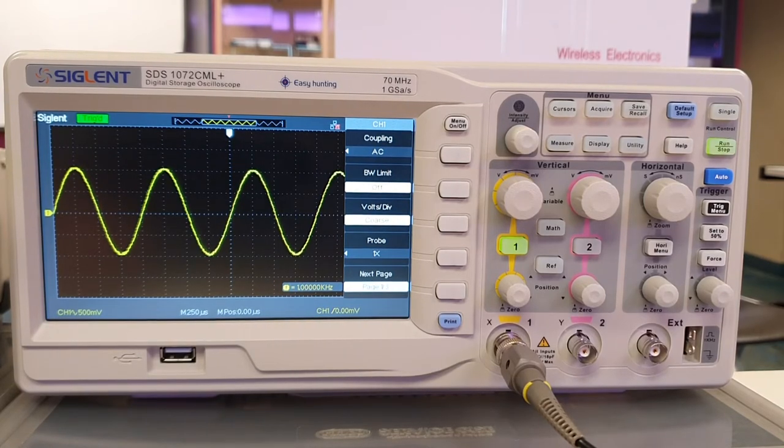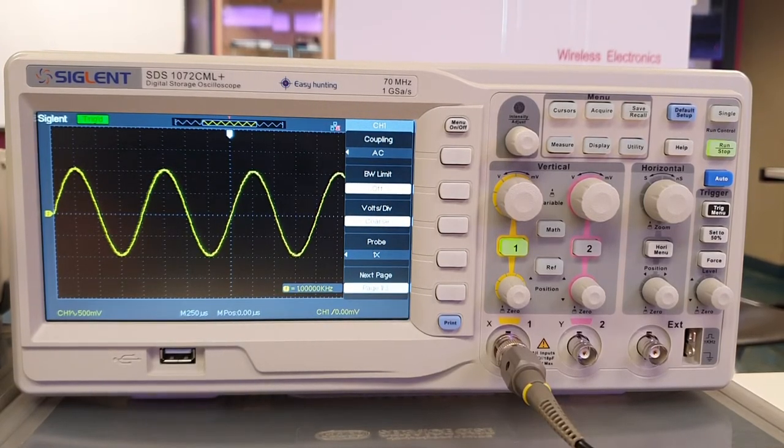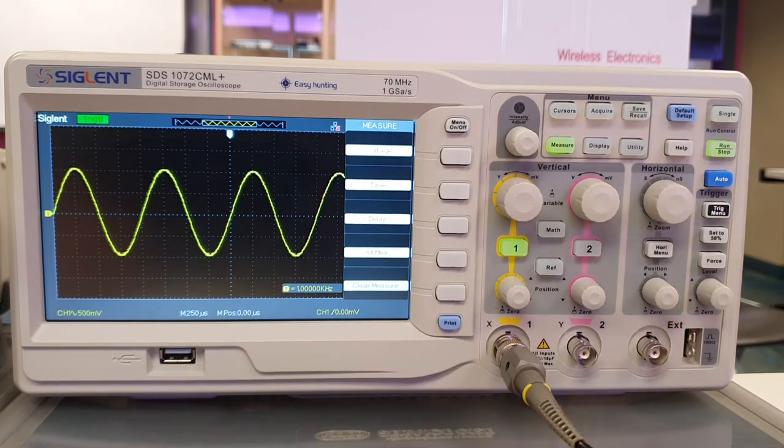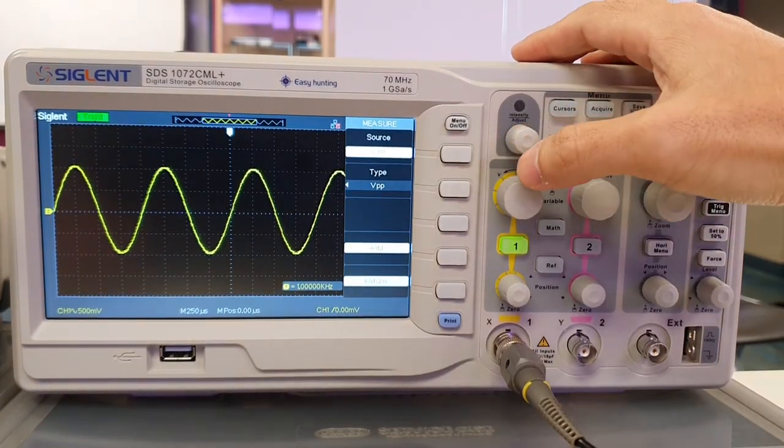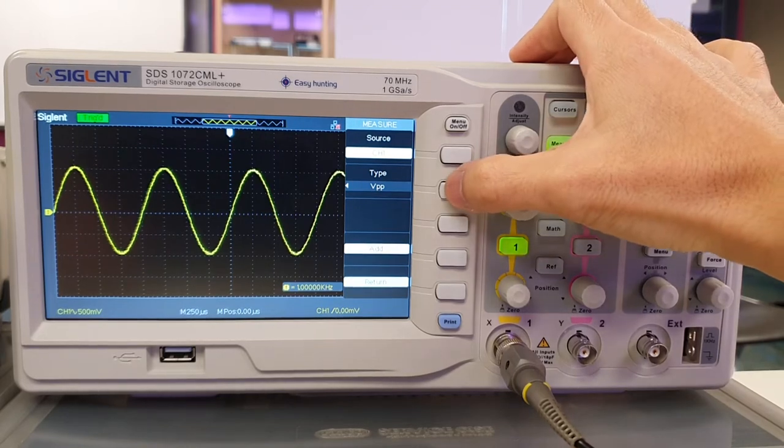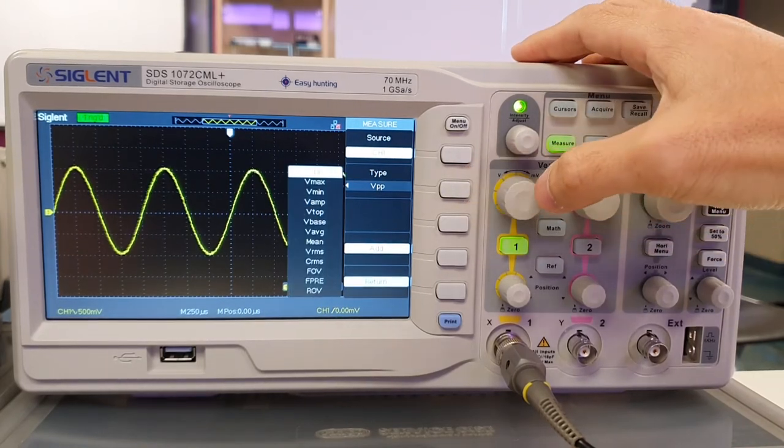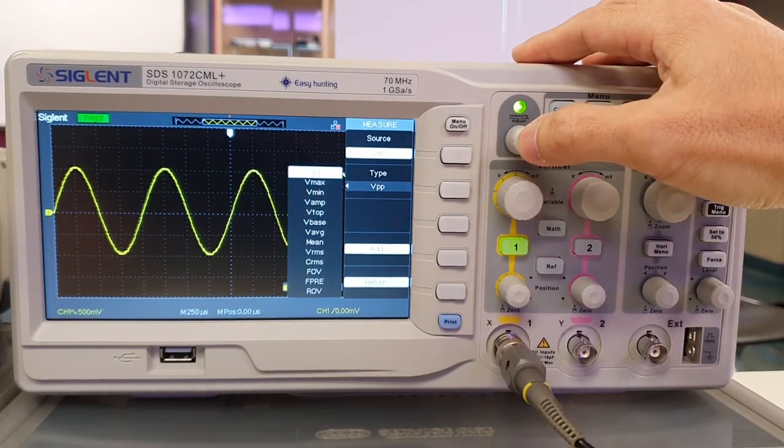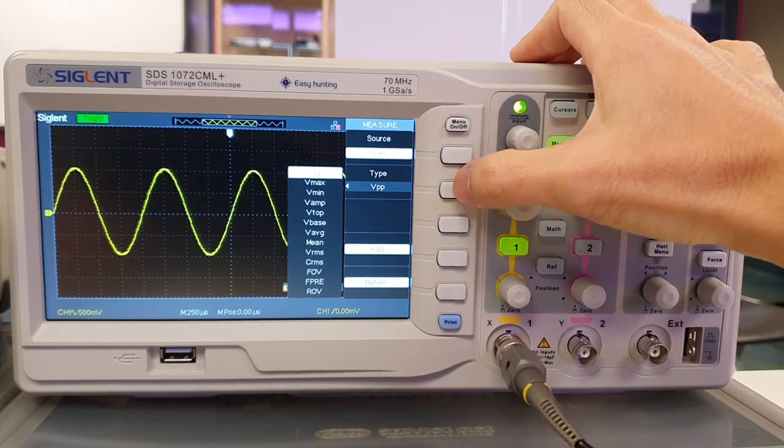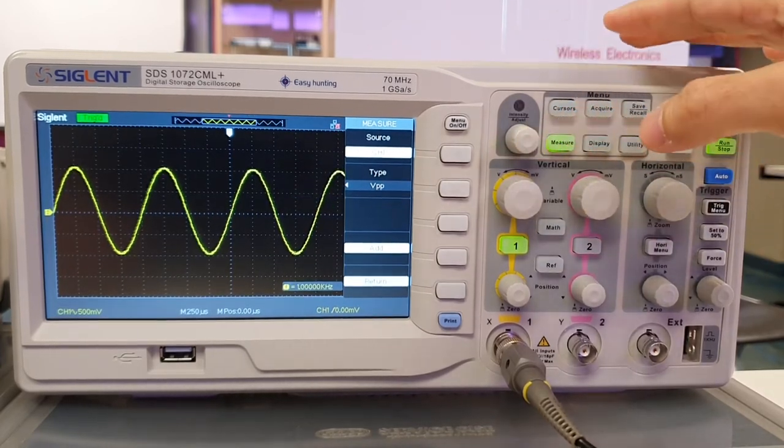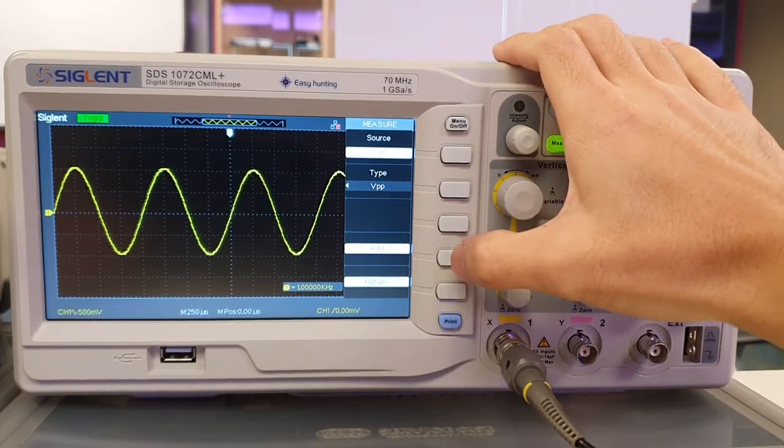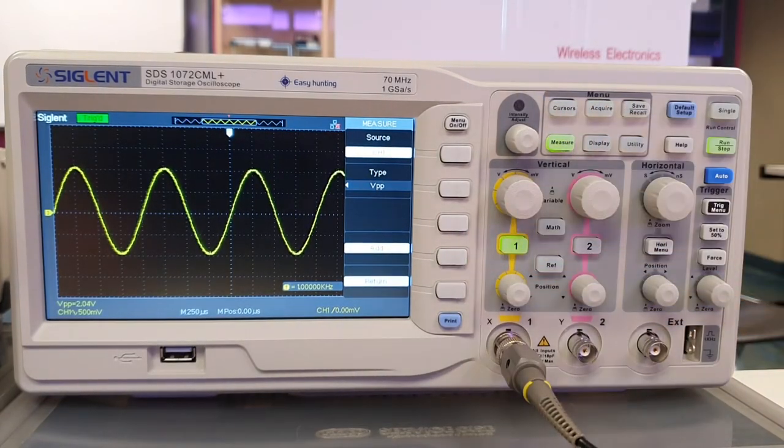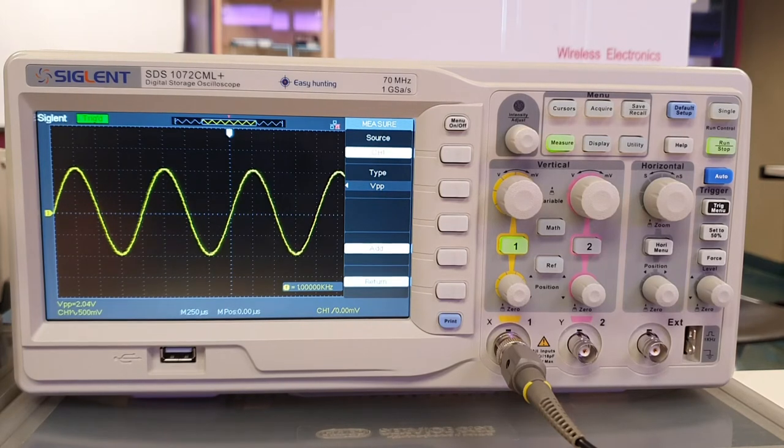To check the peak-to-peak amplitude of the sine wave, press the Measure button, then press the button beside voltage. Press the button beside type, and select VPP. To display the peak-to-peak voltage value, press Add, and it will be displayed at the bottom left side of the display.